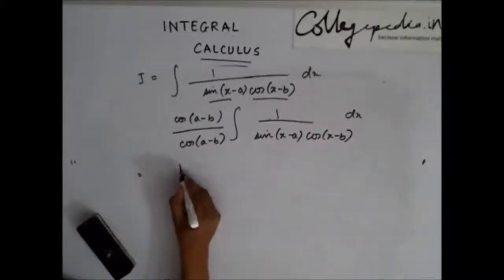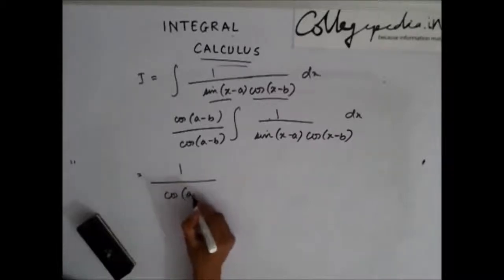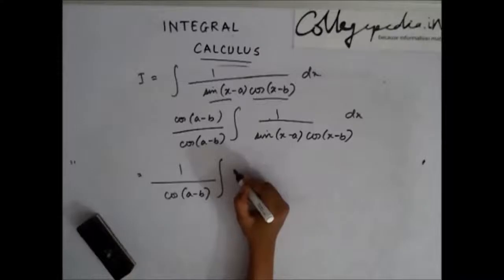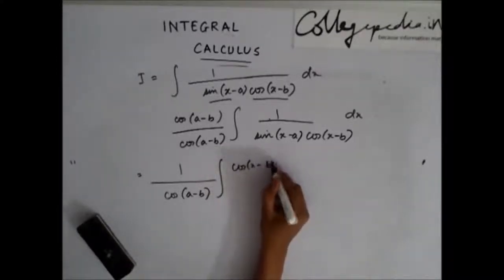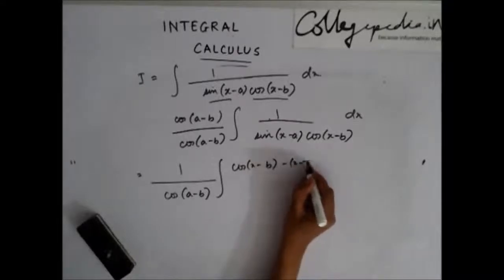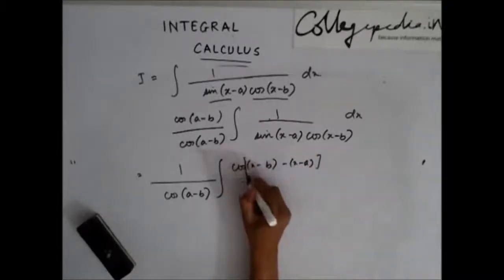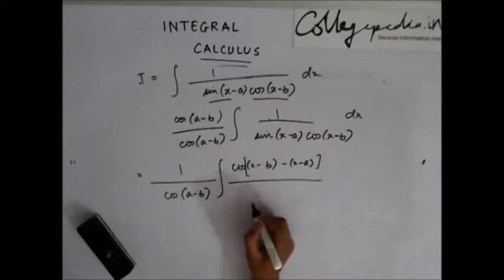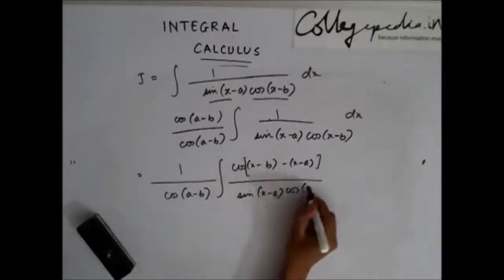Now here I have 1 divided by cos of a minus b integration. This cos a minus b I can write it as cos of x minus b minus x minus a. This becomes a minus b, and in the denominator I have sin of x minus a cos of x minus b.